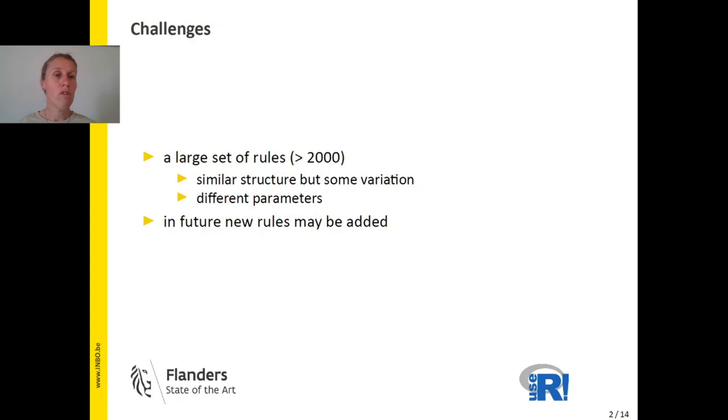In total, we have a large set of over 2,000 of these rules. They all have a similar structure, except for some variation. And in total, we have actually 14 different variants, whereas we had three in our example.